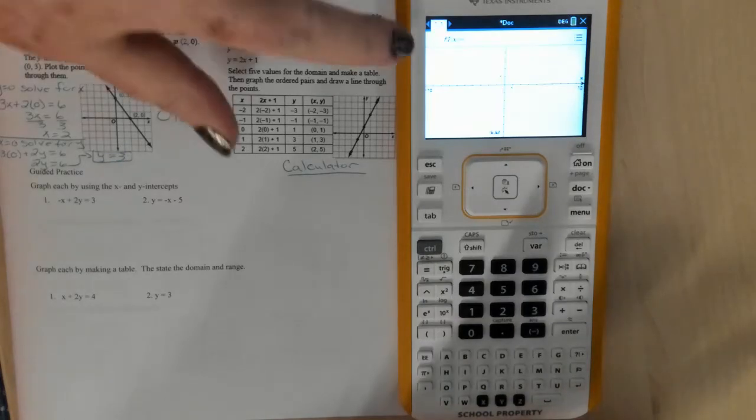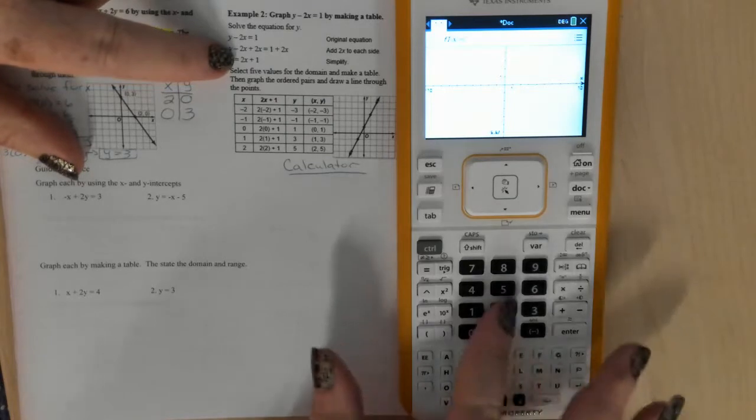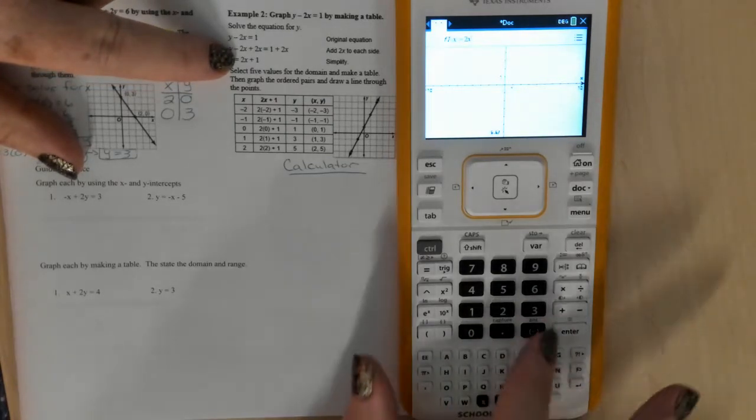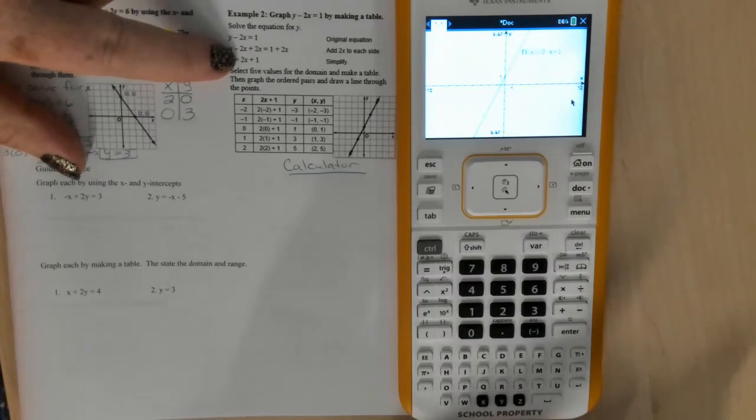Alright, here we go. F of x. This is where we're going to enter our function. Our function is 2x plus 1. Hit enter. There we go. We have a line.